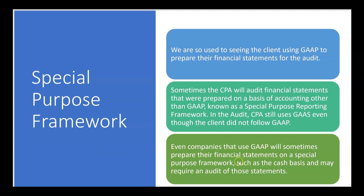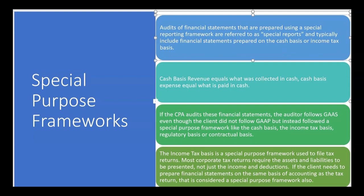Even companies that use GAAP will sometimes prepare their financial statements on a special purpose framework such as the cash basis, and may require an audit of those statements. Audits of financial statements prepared using a special reporting framework are referred to as special reports, and typically include financial statements prepared on the cash basis or the income tax basis. Other frameworks include the regulatory basis and contractual basis — those are the big four special purpose frameworks.